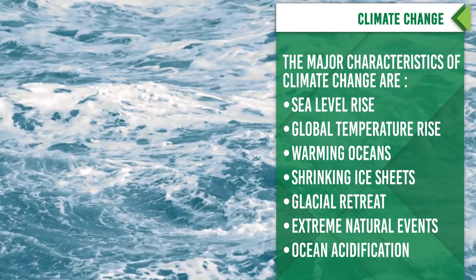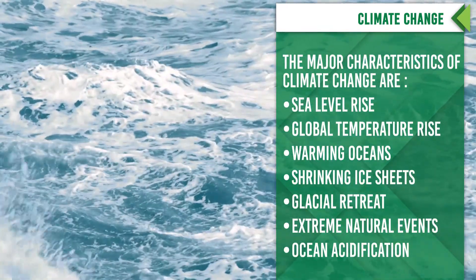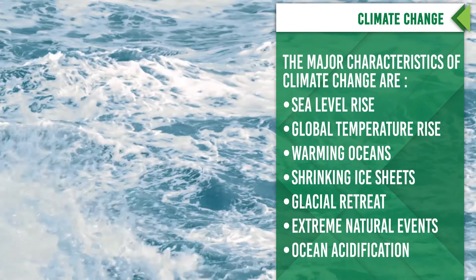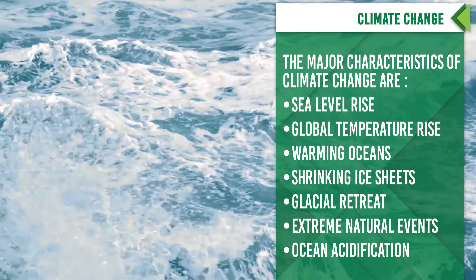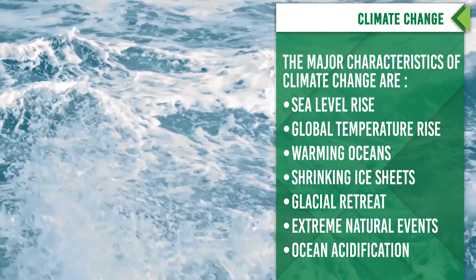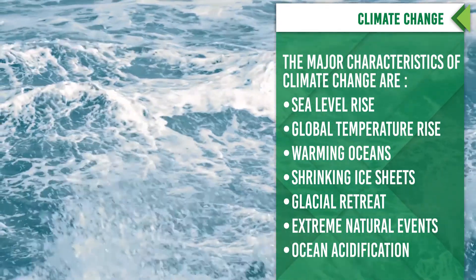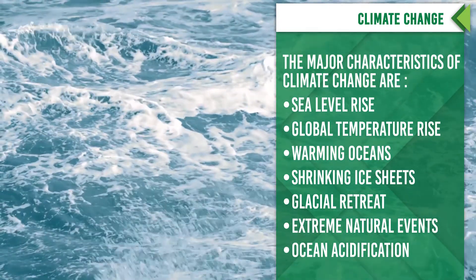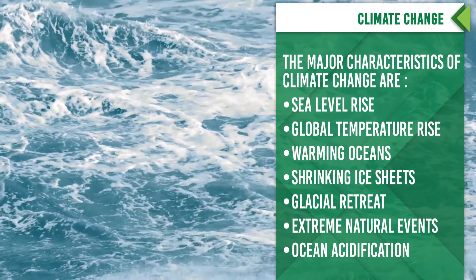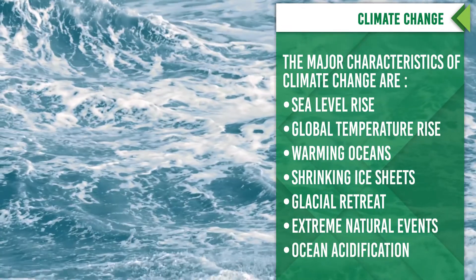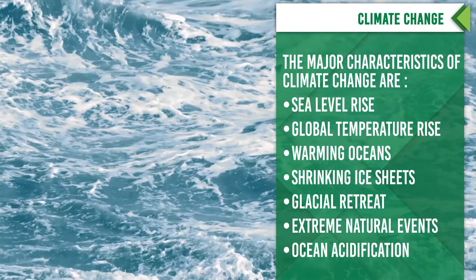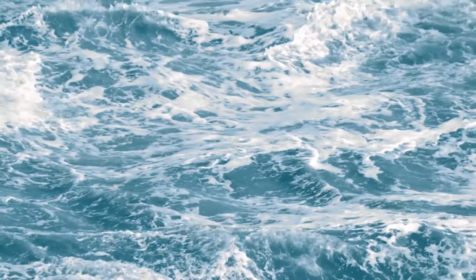Major characteristics of climate change are as follows: sea level rise, global temperature rise, warming oceans, shrinking ice sheets, glacial retreat, extreme natural events, and ocean acidification are a few examples.